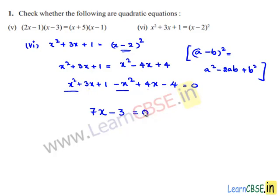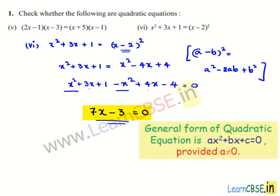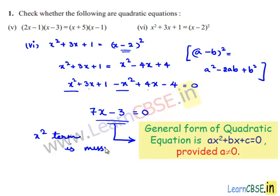So the equation obtained is 7x minus 3 equals 0. We know that the general form of a quadratic equation is ax squared plus bx plus c equals 0. The equation 7x minus 3 equals 0 does not resemble this form because the x squared term is missing. Since the x squared term is compulsory for a quadratic equation, we conclude that the given equation is not a quadratic equation.